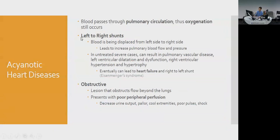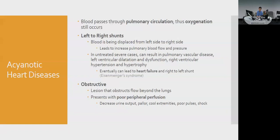There are two main acyanotic categories. Left-to-right shunts occur when there is a pathway between the left and right heart — oxygenated blood mixes with deoxygenated blood, recirculates to the right heart, and goes back to the pulmonary circulation. This causes increased pulmonary blood flow, pulmonary hypertension, pulmonary vascular disease, heart failure, and eventually Eisenmenger's syndrome — where the shunt flips right-to-left. Obstructive lesions have a blockage beyond the lungs, causing poor perfusion: pallor, cold extremities, decreased urine output, and shock.